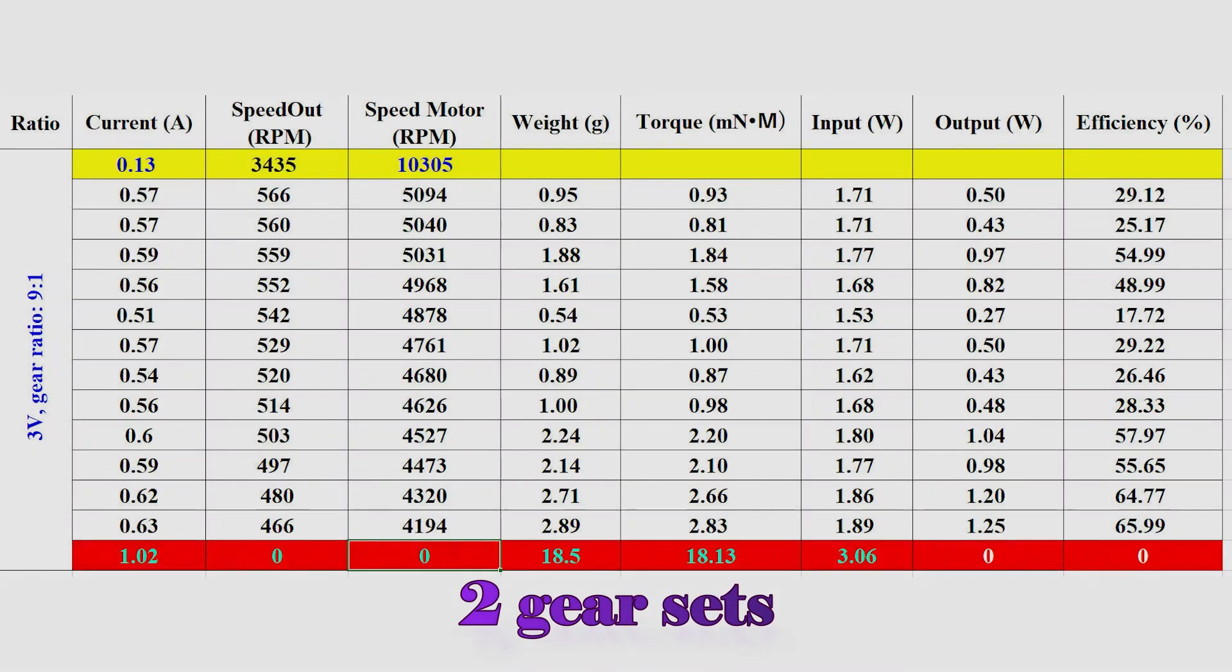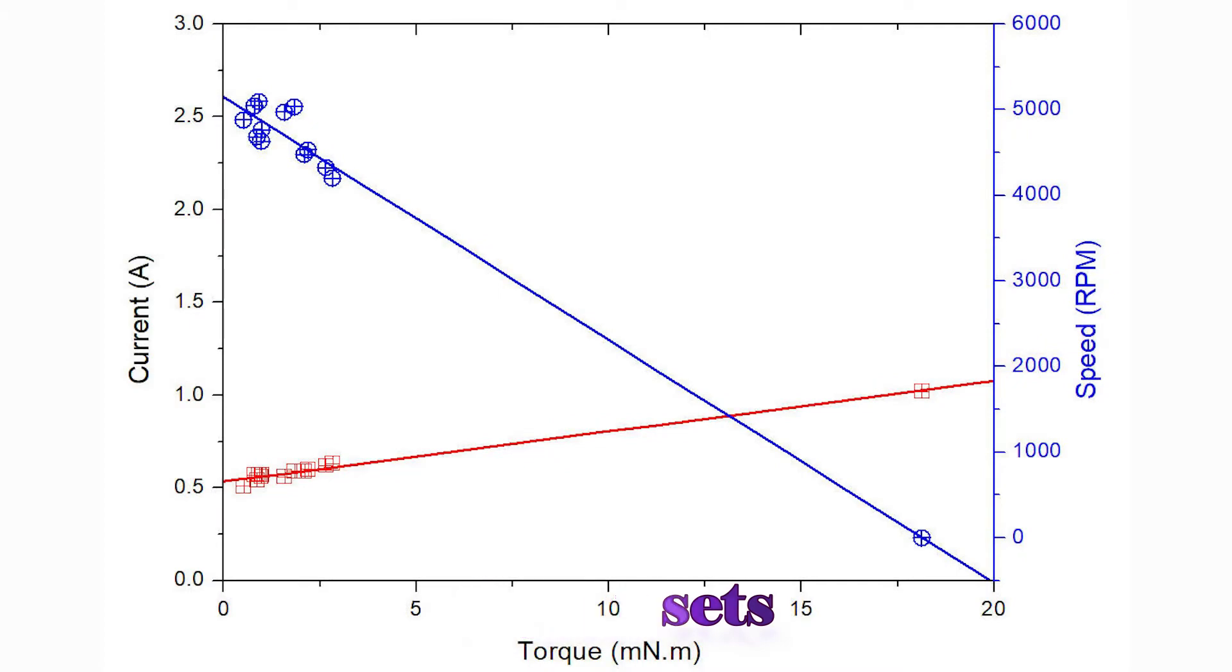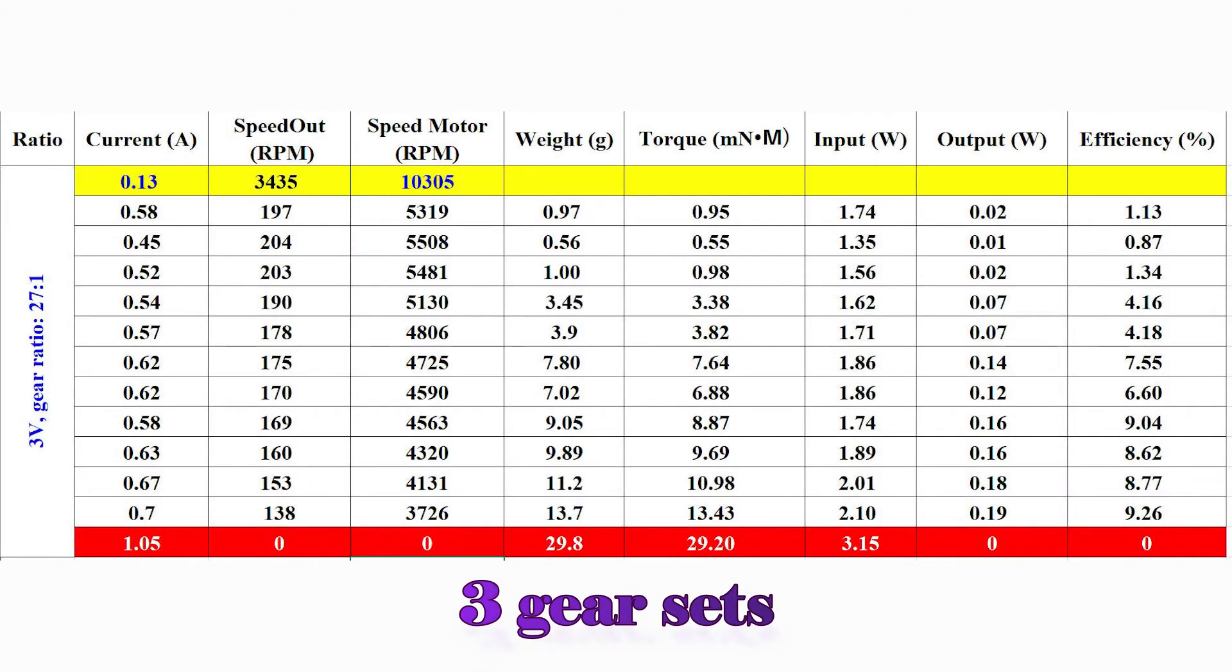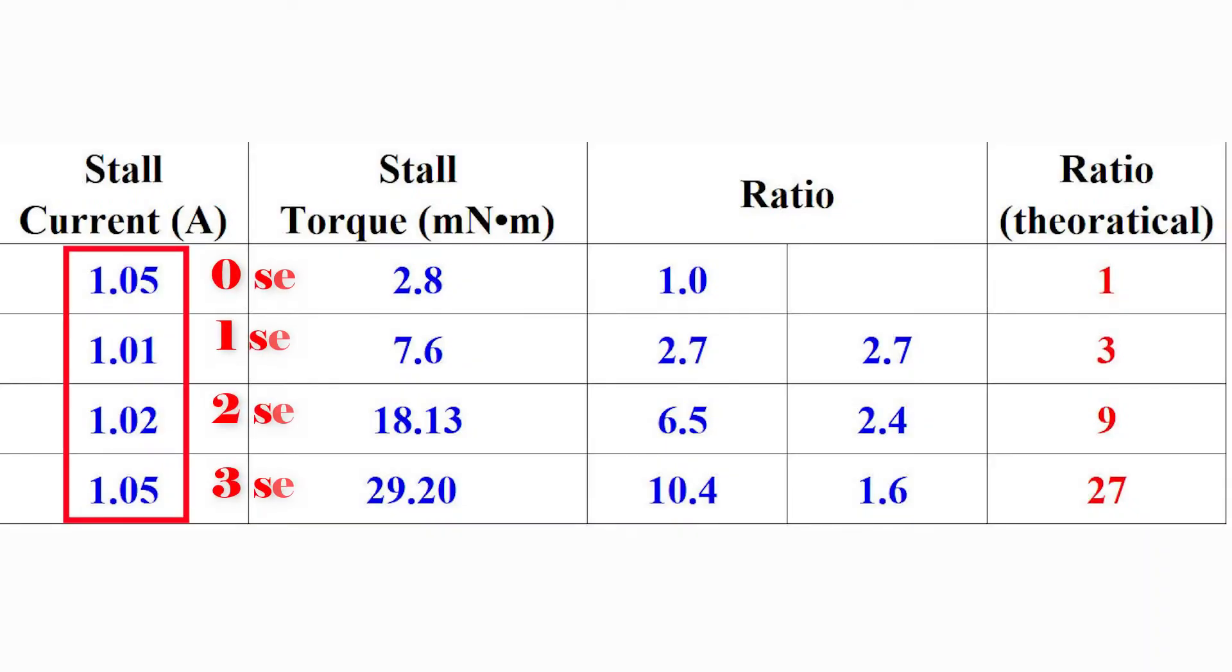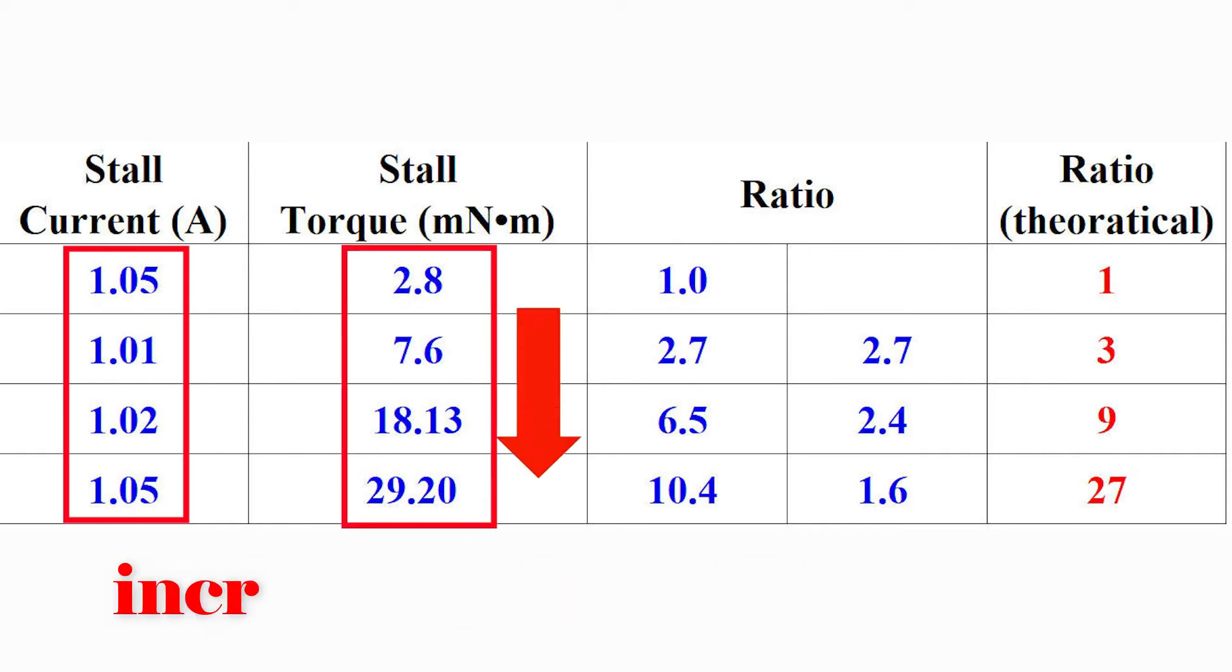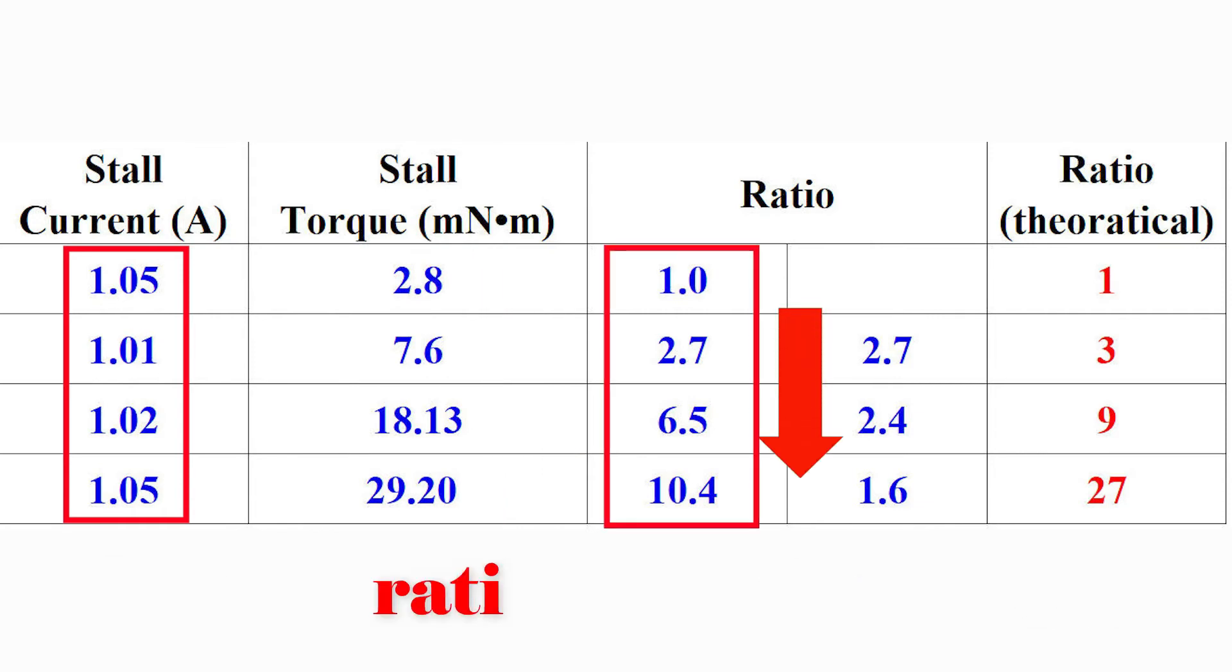The results using 2 and 3 gear sets are listed here. They are quite similar with the 1-gear set except the torque increases much higher. The stall currents are almost the same between no-gear set and 1, 2, and 3-gear sets, about 1A each. Obviously, the mini DC motor stops rotating at 3V and the stall current is about 1A. With the increase of the number of gear sets, the torque increases. The ratio increases also but does not reach the theoretical number three times.